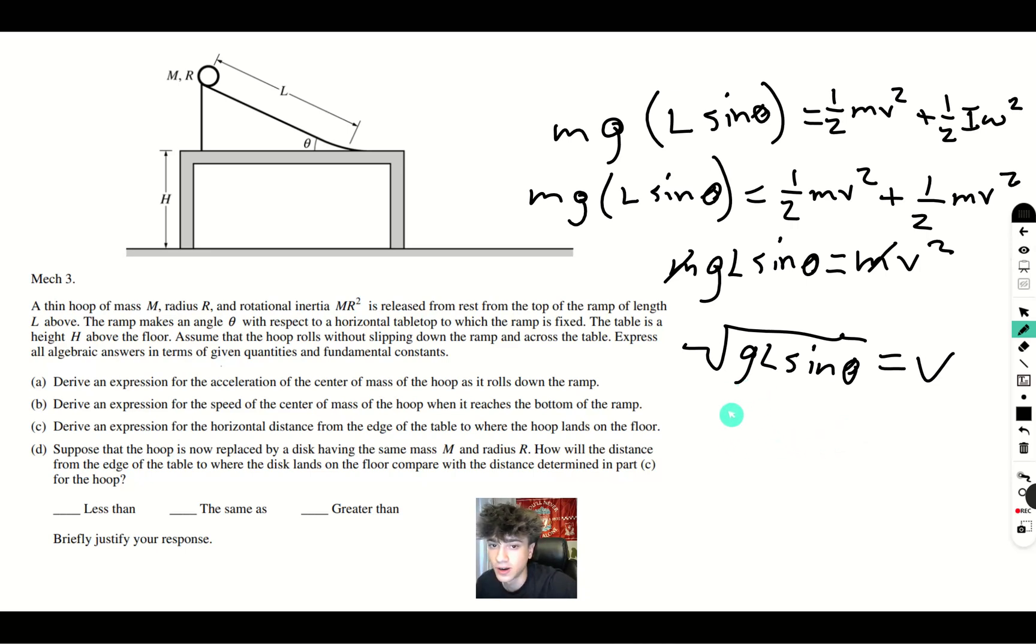So, our height is going to be H. Our H final is going to be 0. Our V initial is going to be 0. It's going to be H plus V initial T, which is 0 T plus 1 half AT squared, which will give you 1 half times 10, which is 5 T squared.